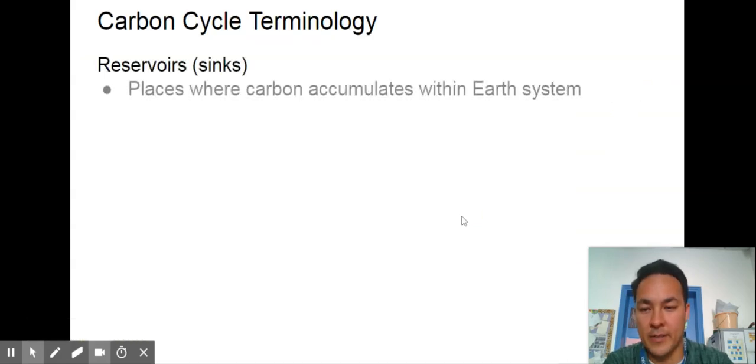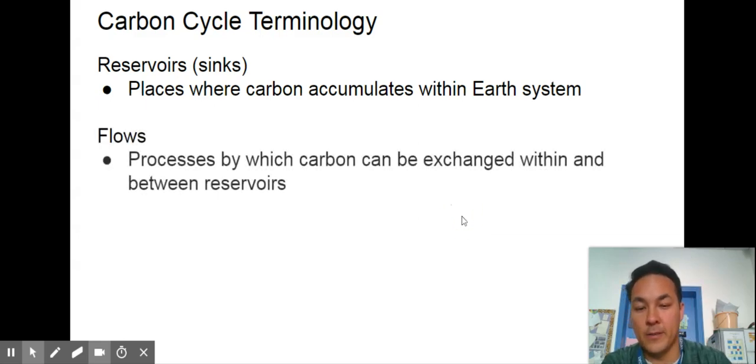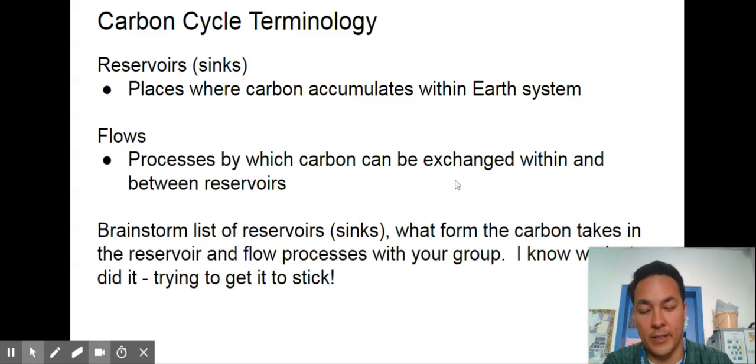Here is some terminology. The reservoirs are the sinks or the places where carbon accumulates within the Earth system. Flows are the processes by which it can be exchanged. Can you brainstorm a list of reservoirs or sinks where carbon exists, and then how does it flow between them?